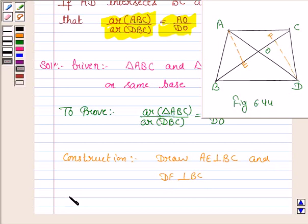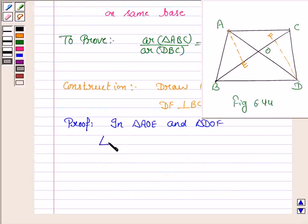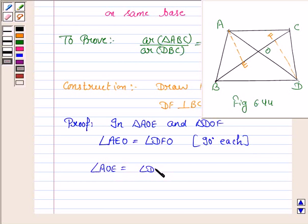Let's now start on with the proof. Now, in triangle AOE and triangle DOF, that is this and this.